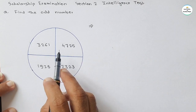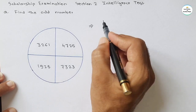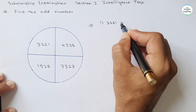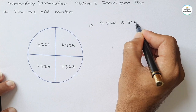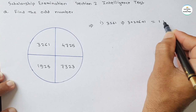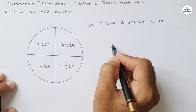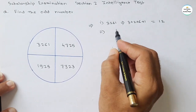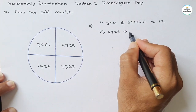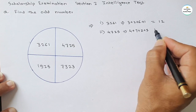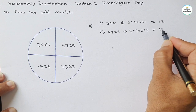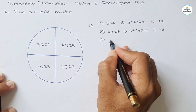First, take the summation of the digits of each number. First number is 3261 — summation: 3 plus 2 plus 6 plus 1 equals 12. For the second number, 4725 — summation: 4 plus 7 plus 2 plus 5. That is 4 plus 7 equals 11, then 11 plus 2 equals 13, then 13 plus 5 equals 18.